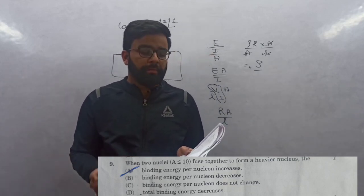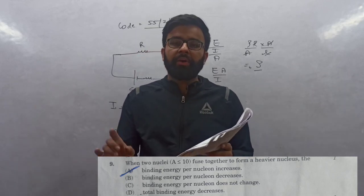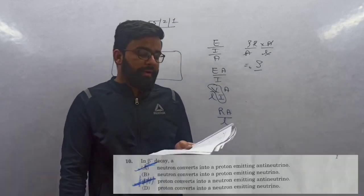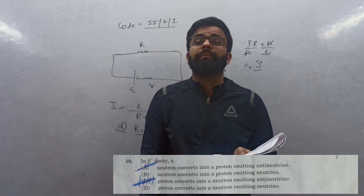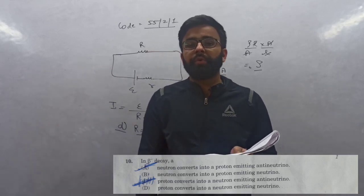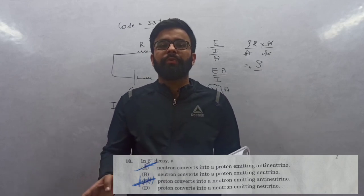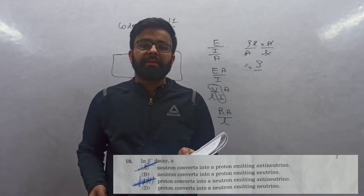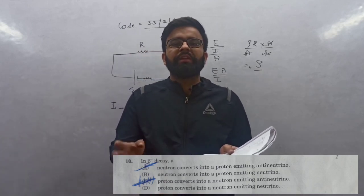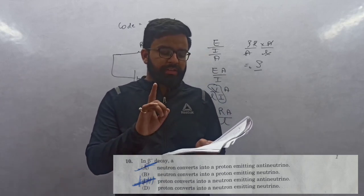Question 10: Beta minus decay. Nucleus has excess neutrons. It will convert into proton. The process of converting neutron into proton is called beta minus decay and it does so with emission of anti-neutrino. Answer is A, neutron converts into proton emitting anti-neutrino.